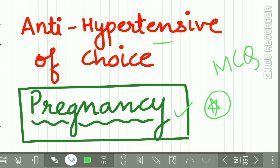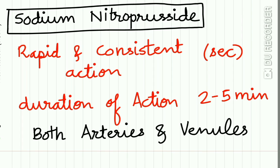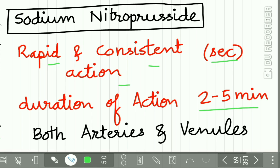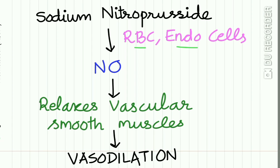Sodium nitroprusside is an arteriolar plus venodilator with rapid and consistent action — onset within seconds, duration of action two to five minutes. It is acted upon by RBCs and endothelial cells to release nitric oxide, which relaxes vascular smooth muscle causing vasodilation.